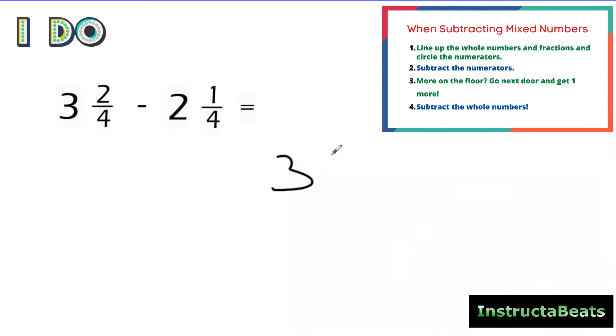So first of all, I'm going to line this up vertically. I'm going to circle my numerators right here. If I'm doing 2 minus 1, more on the top, no need to stop. So 2 minus 1 is 1. My denominator stays the same. 3 minus 2 is also 1.